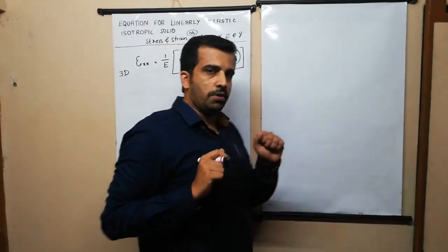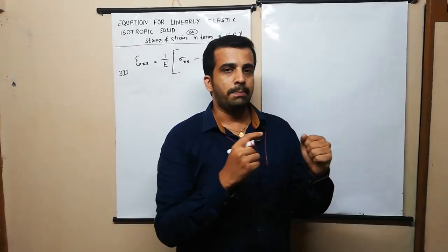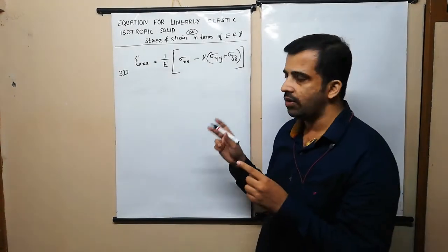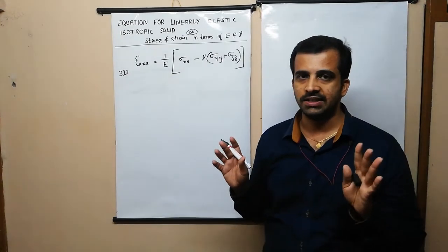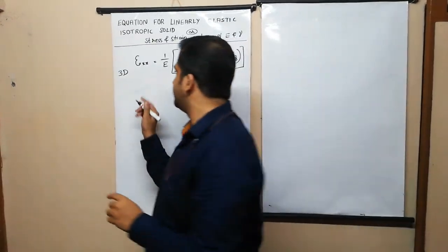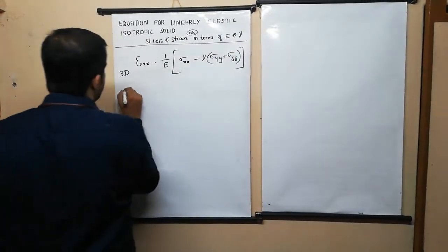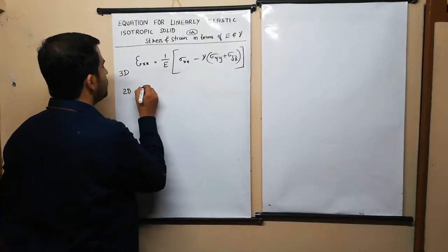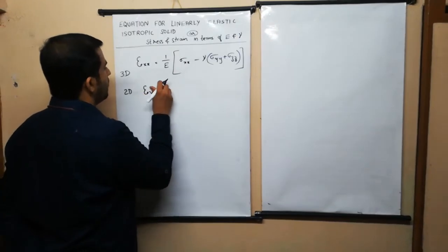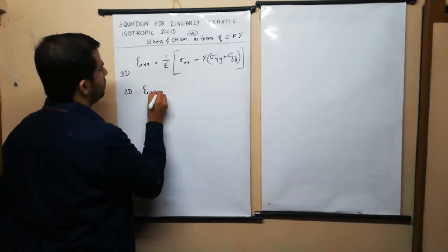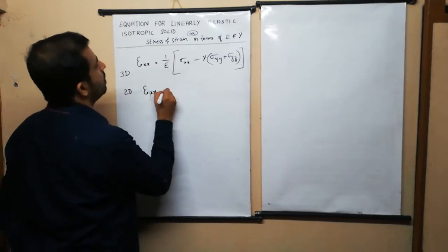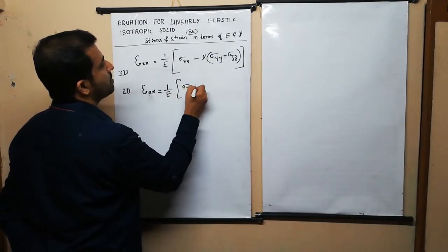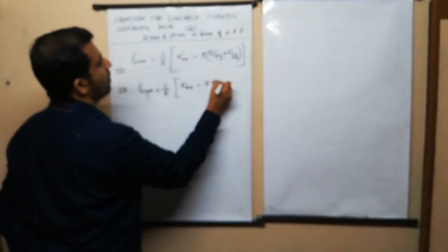Now if we are considering the plane stress and plane strain condition, we will have only two variables. Considering the x and y plane, in the two-dimensional case we can write epsilon_xx is equal to 1 divided by E into (sigma_xx minus mu into sigma_yy).